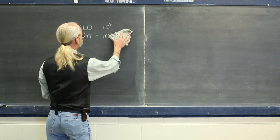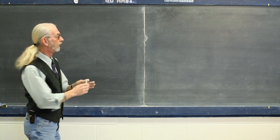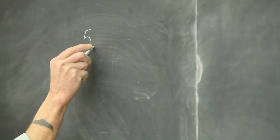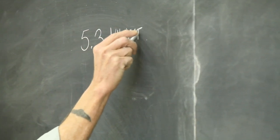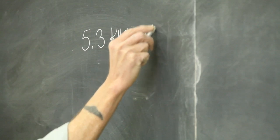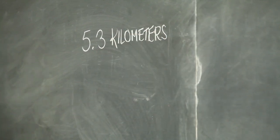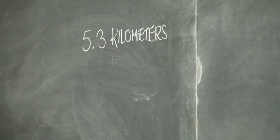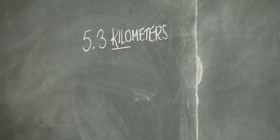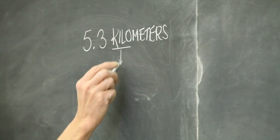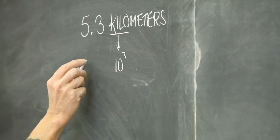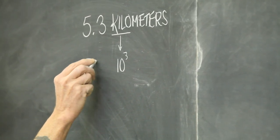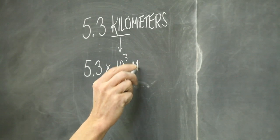For instance, I could start with five point three kilometers. But because I now know that kilo is identical and equivalent to ten to the third power, I can replace kilo with ten to the third. And now I rewrite it as five point three times ten to the third meters.